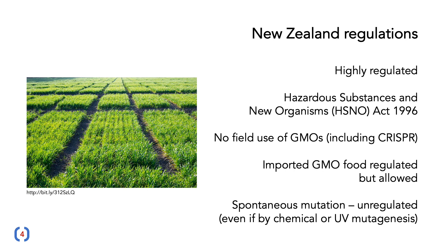New Zealand regulations are very, very strict. Genetically modified organisms and their use are highly regulated in New Zealand by the Hazardous Substances and New Organisms Act, often known by its abbreviation HASNO. In New Zealand, there's no field use of any genetically modified organisms, including those created using the CRISPR system. But you are allowed to import genetically modified food, although it is regulated. One interesting point is that the use of spontaneous mutation to make new organisms is completely unregulated — so even if new organisms are made by chemical methods or UV mutagenesis, those can be grown and commercialized in New Zealand without further regulation.